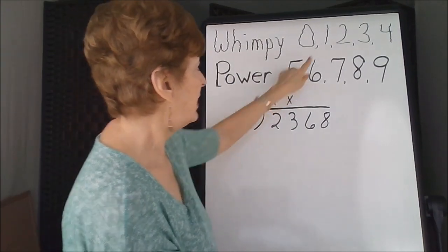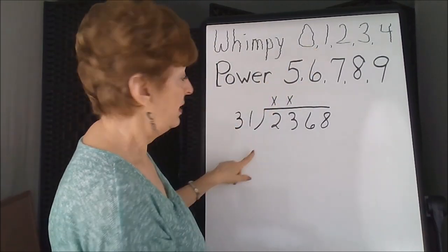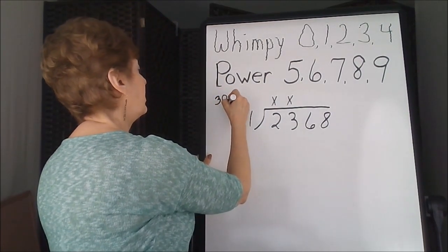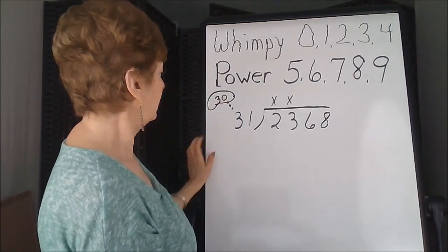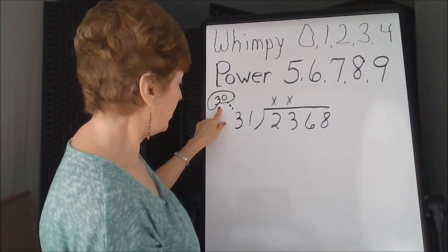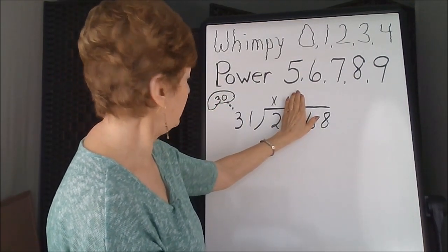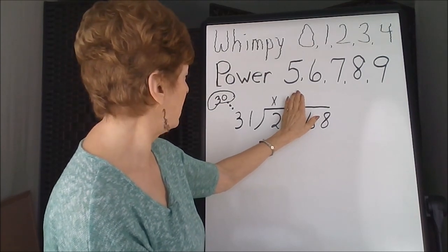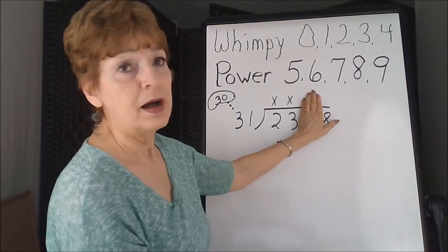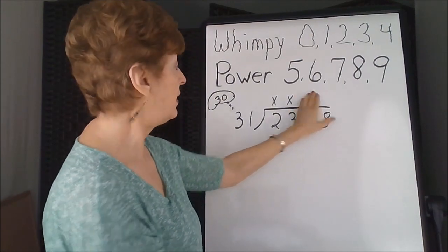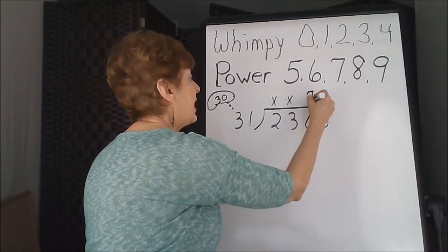1 is a wimpy number, so we are going to be working with the 30 when we think. So the 30, or the 3, divides into 2, no, it's too large, or this one's too small, into 23. 3 times 7 is 21, let's see if that gets us close.